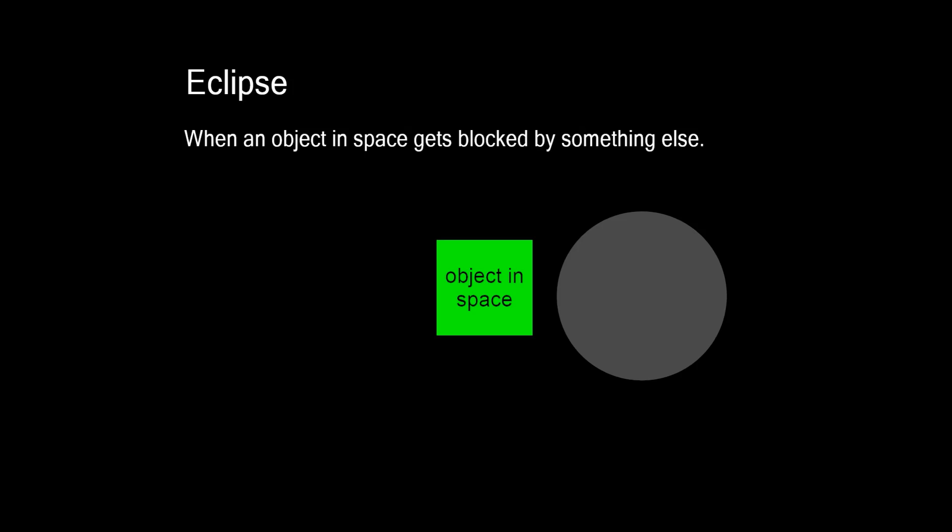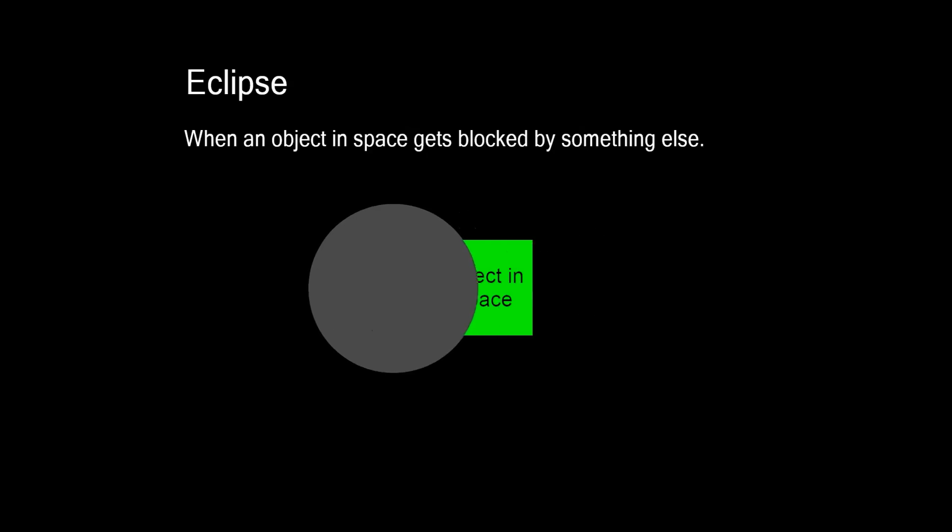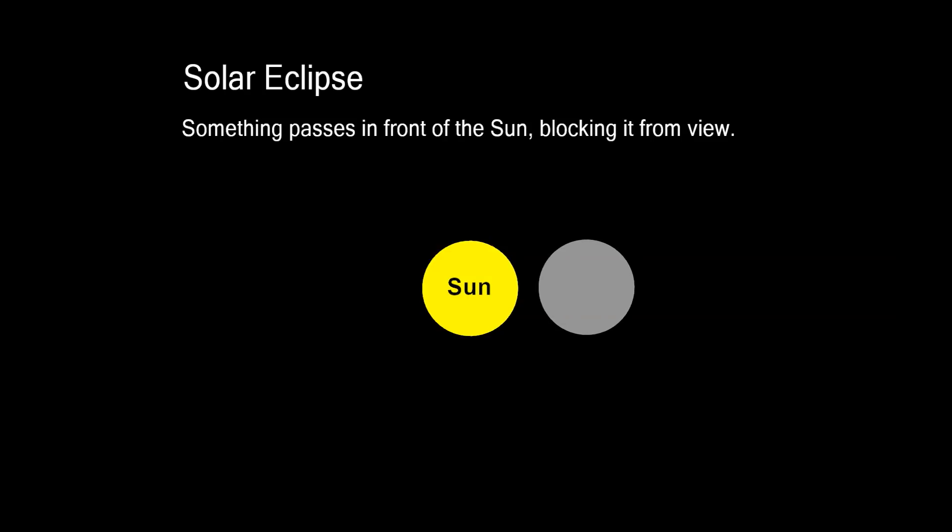An eclipse occurs when an object in space gets blocked by something else. A solar eclipse, or eclipse of the sun, occurs when something passes in front of the sun, blocking it from view.